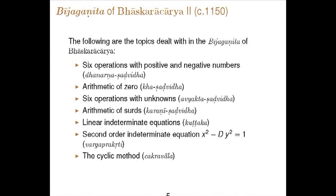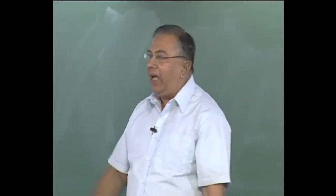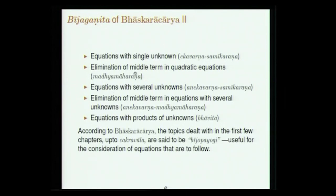The contents of Bhaskara's Bijaganita include: Dhanarana Shadvida — six operations with positive and negative numbers; Kha Shadvida — six operations with zero; Avyakta Shadvida — six operations with unknown quantities; arithmetic of surds (Karani Shadvida); linear indeterminate equations (Kuttaka); second-order indeterminate equations (Varga Prakriti); the cyclic method (Chakravada); equations in single unknown (Ekavarana Samikarana); Madhyamaharana — elimination of the middle term in quadratic equations; equations with several unknowns (Anekavarana Samikarana); and finally the Bhavita form of equations.